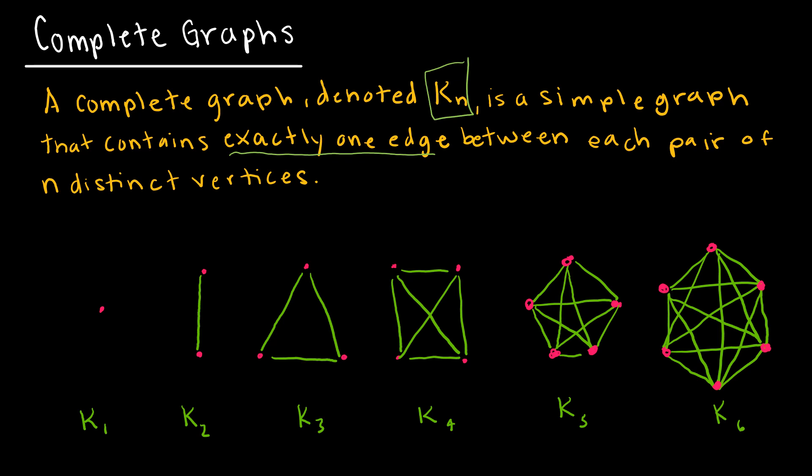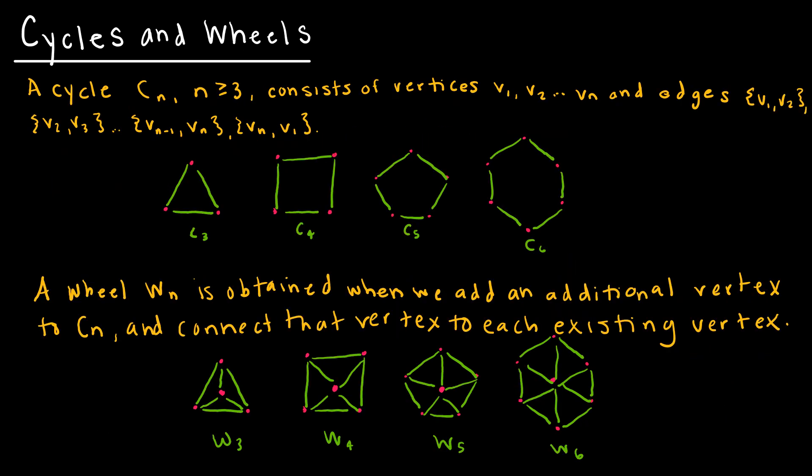Two other very related special types of graphs are cycles and wheels. A cycle looks kind of like our complete graphs but with all the interior edges removed. A cycle consists of all the vertices connected so that v1 connects to v2, v2 to v3, v3 to v4, and so on all the way up to v_{n-1} to v_n.